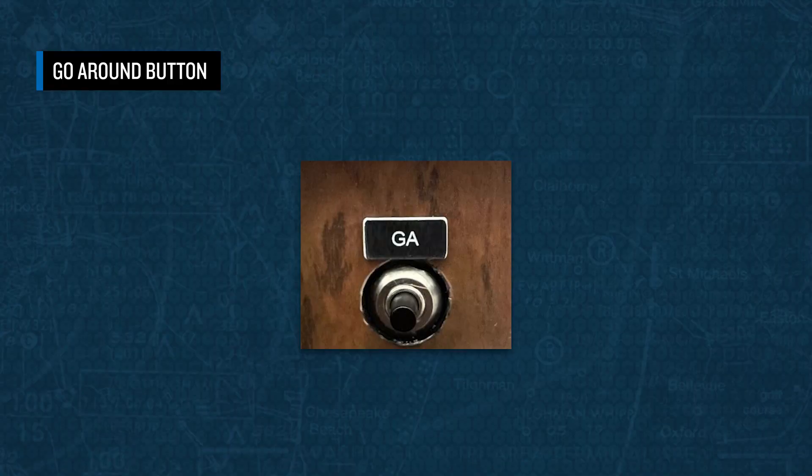The Supplemental Type Certificate, or STC, for the GFC-600 Digital Autopilot allows for the installation of a go-around button. While the location of the button may vary by aircraft, it will typically be mounted in a visible location on or near the control used to manage thrust.